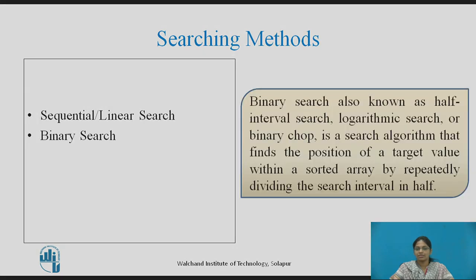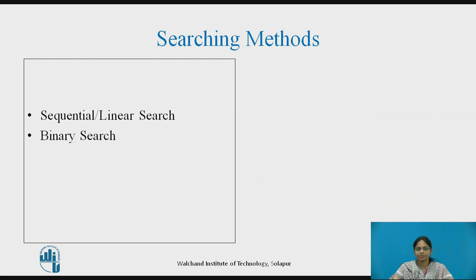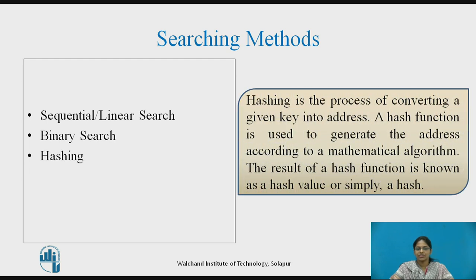Binary search, also known as half interval search, logarithmic search, or binary chop, is a search algorithm that finds the position of a target value within a sorted array by repeatedly dividing the search interval in half. Hashing is the process of converting a given key into an address. A hash function is used to generate the address according to a mathematical algorithm, and the result is known as a hash value or simply a hash.